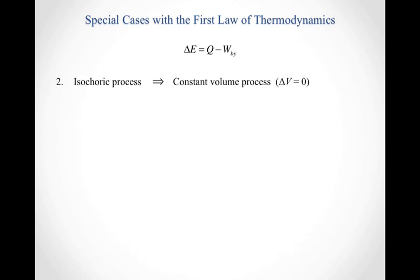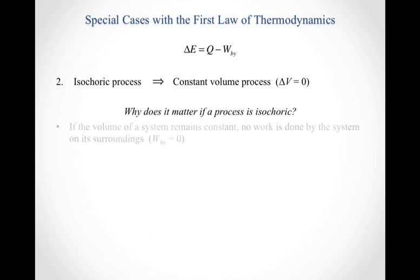The second process we'll talk about is an isochoric process. An isochoric process simply means that you hold the volume constant — the volume doesn't change. Another label for an isochoric process is isovolumetric. If your volume doesn't change, then no work can be done on the system or by the system.